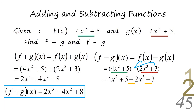To simplify, just combine similar terms — only those terms with x having the same exponent. In this case, the x cubed cannot combine with x squared. Then simplify all the constants.